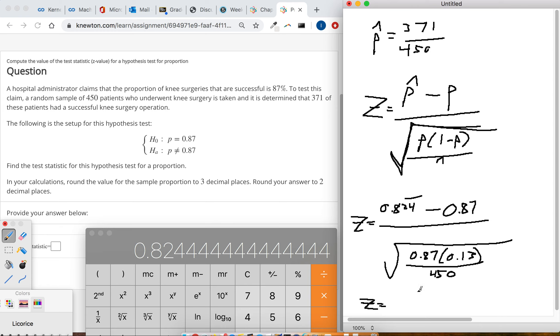So let's figure out what that square root is first. 0.87 times 0.13, divide by that 450, and then apply the square root. So the whole bottom just became 0.01585.